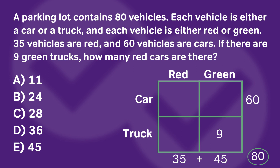Now things start falling into place. First, I'll look at green cars. We know there are 45 total green vehicles, so if there are nine green trucks, that means there have to be 36 green cars. Now, how many red cars are there? We look at the car row: whatever that number is plus 36 must equal 60, the total number of cars. Using quick mental math, you get 24. And just like that, you have the correct answer.